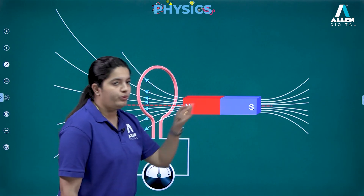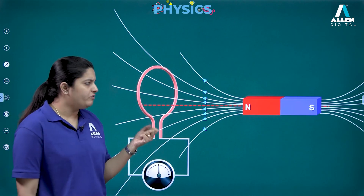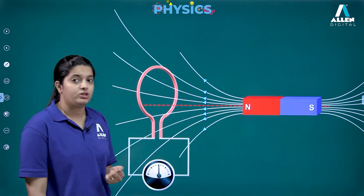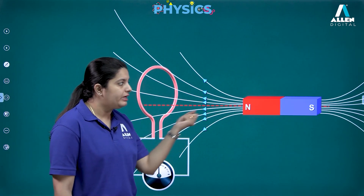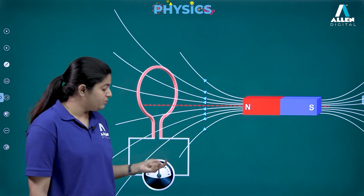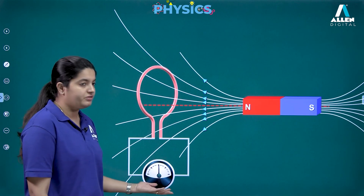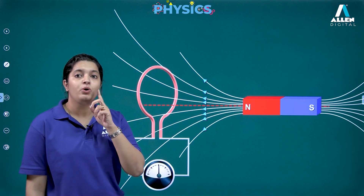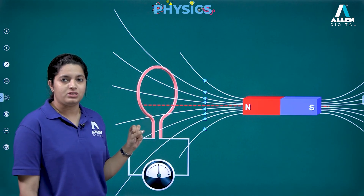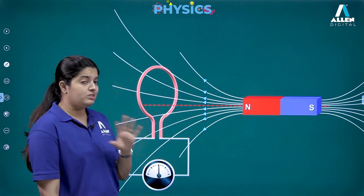Two things were observed in the first experiment. Whenever he moved the bar magnet towards or away from the coil, there was a deflection. Second, whenever he changed the speed of the bar magnet, the deflection also varied — speeding up gave more deflection, slowing down gave less — meaning more speed produced more current.